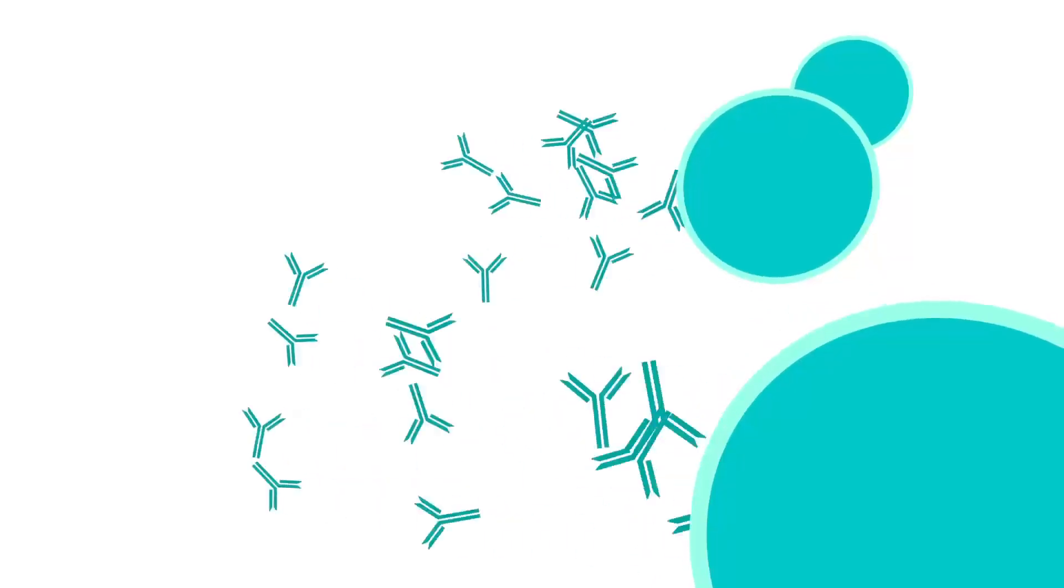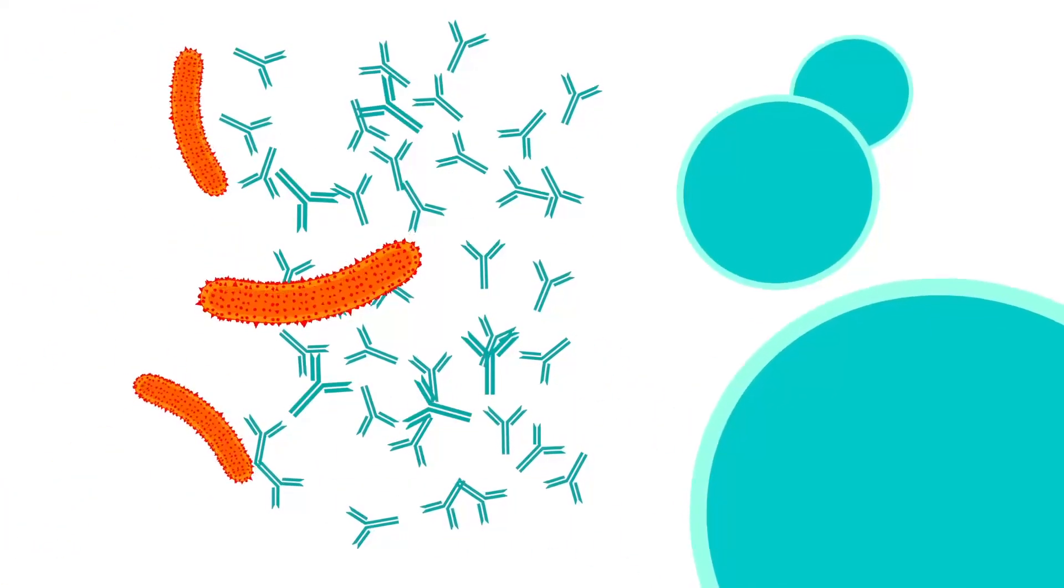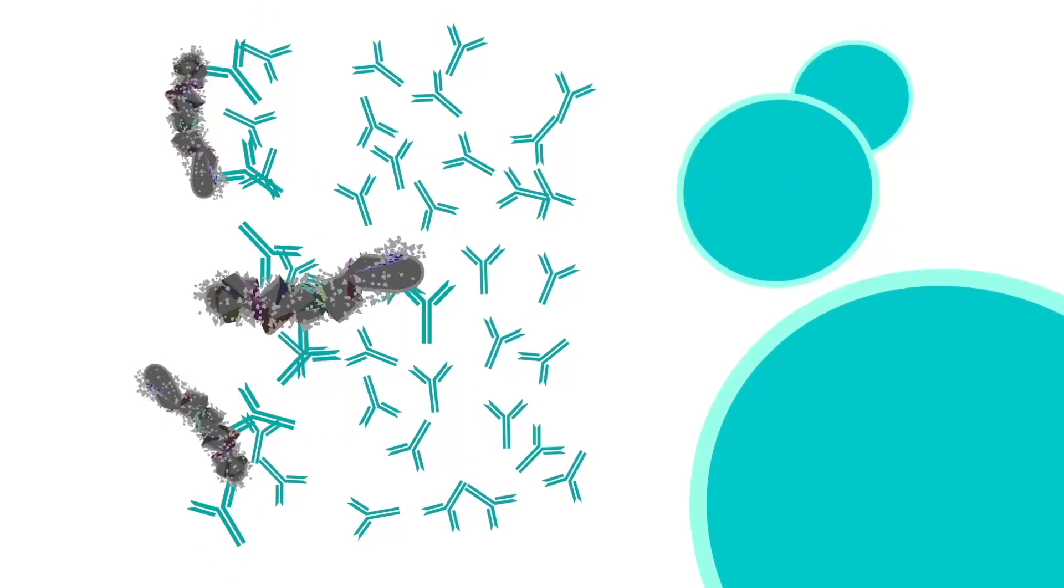Antibodies remain in the blood, and some white blood cells may also become memory cells. If those specific bacteria invade the body again, the immune system will respond so quickly that you won't get ill.